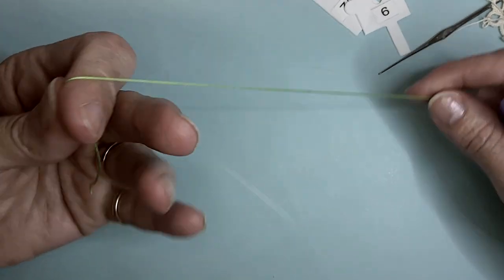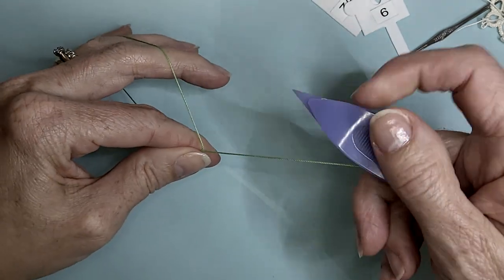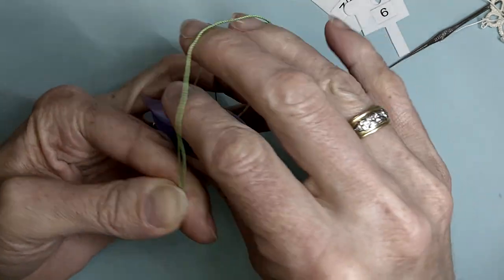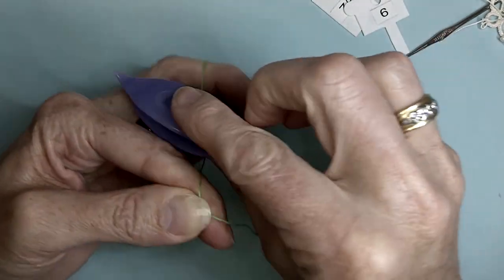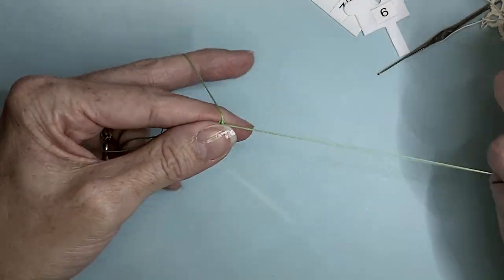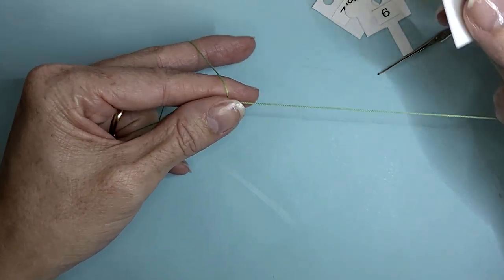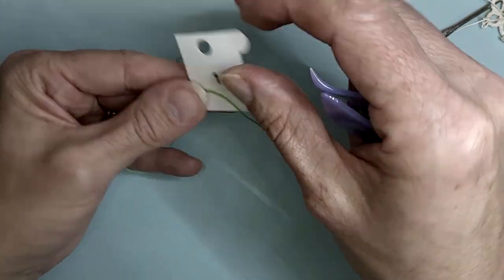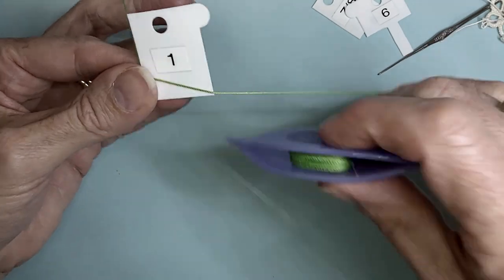Ring A: leave your tail. We have a ring with a count of 10. We need to work a long picot. I'm using a one inch gauge here. You can make it longer if you like.